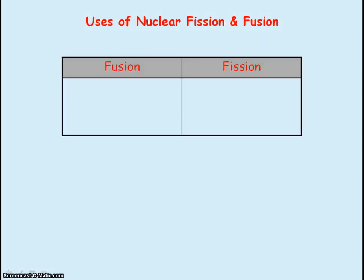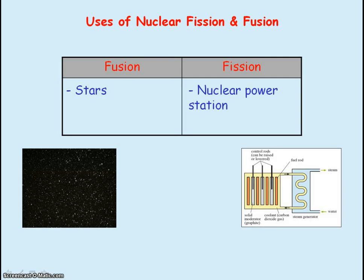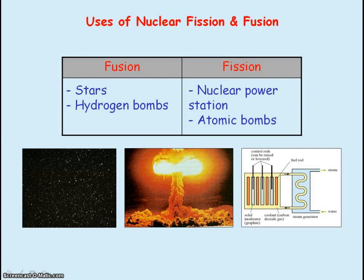Nuclear fusion occurs in stars in the cores of the stars and this is how stars get their energy, the light and heat they emit. A peaceful use of nuclear fission would be in nuclear power stations to generate electricity but a destructive use of fission and fusion are bombs, atomic bombs and hydrogen bombs.